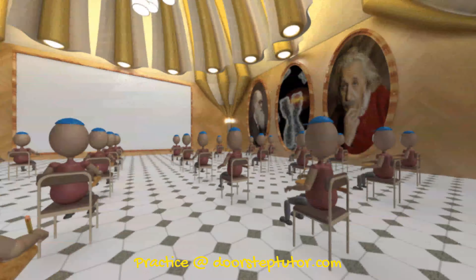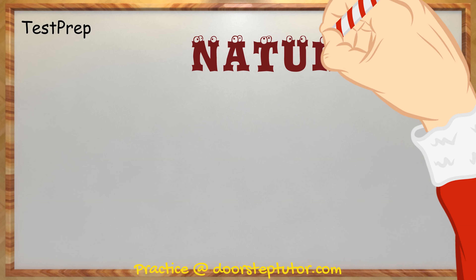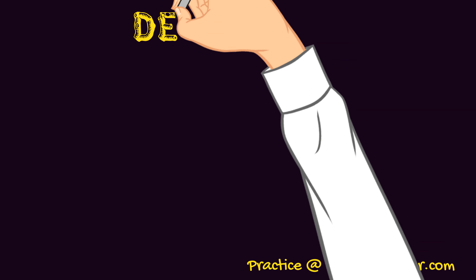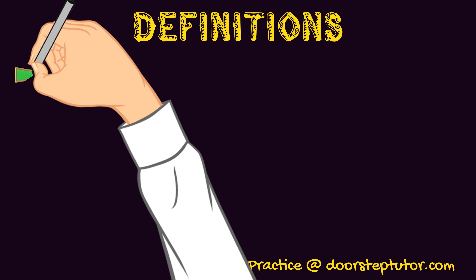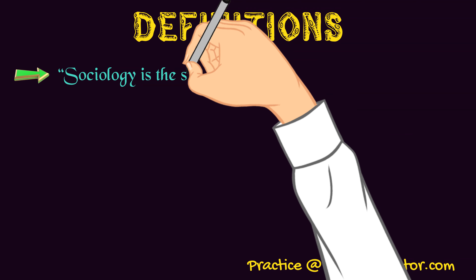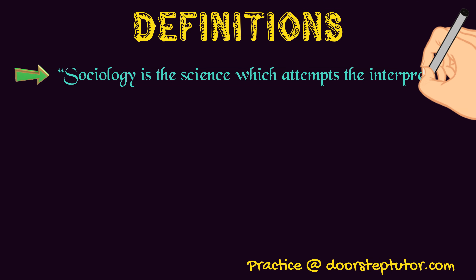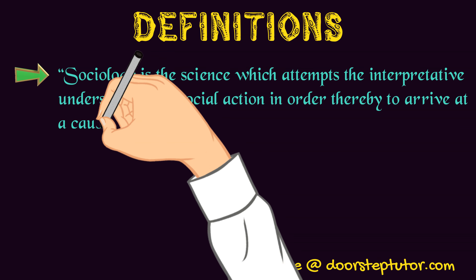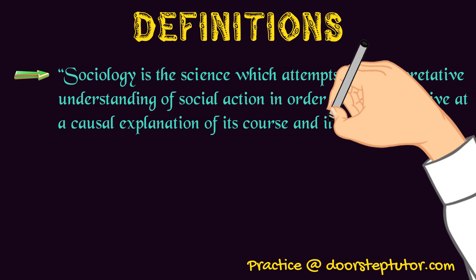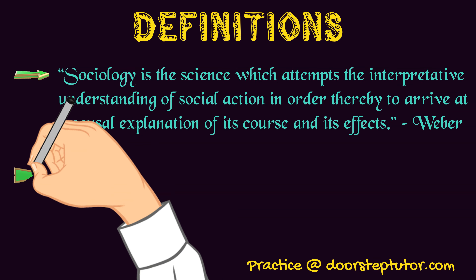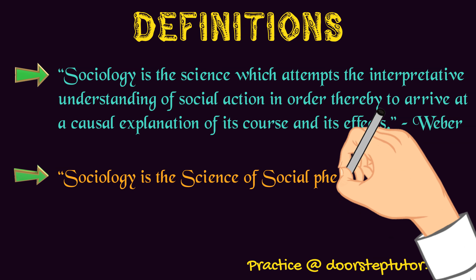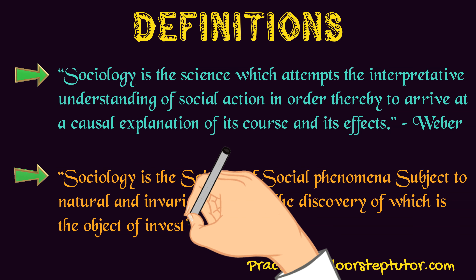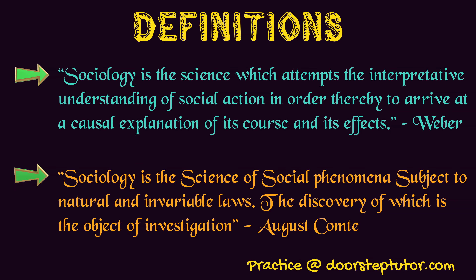In today's lecture, we will be discussing the nature of sociology. Before we begin, let us look at these two definitions of sociology given by Weber and the father of sociology, Auguste Comte. As you can see, I can highlight the keywords for you: that sociology is a science and it attempts for interpretative understanding of social action. Sociologists give a cause and effect relationship of what is happening in the society, and they try to understand it rather than creating any ethics or norms as to how the society should function.